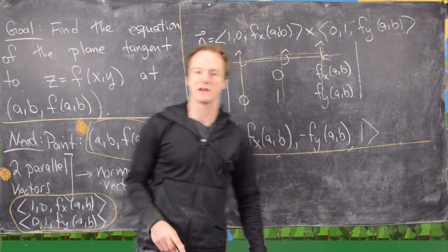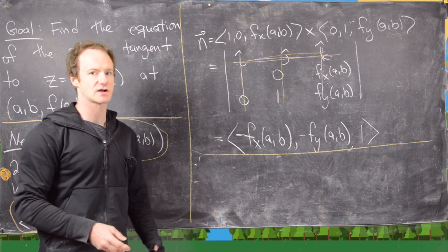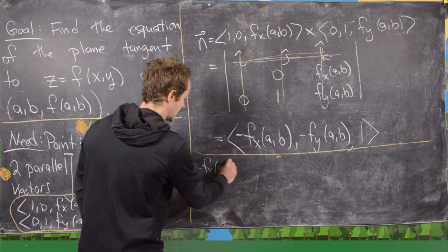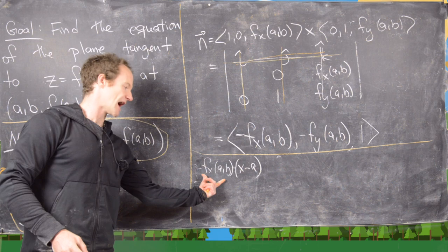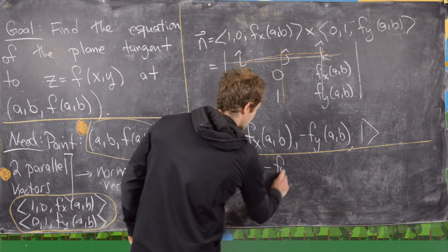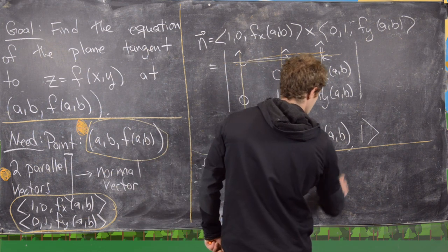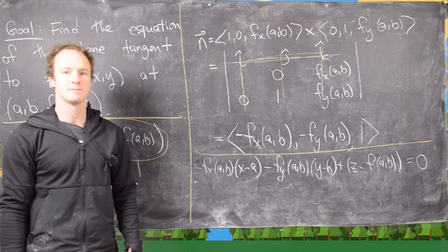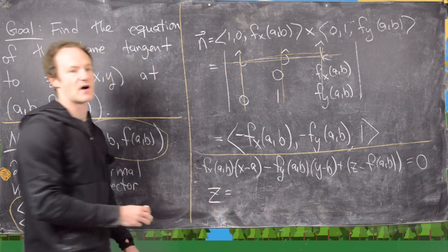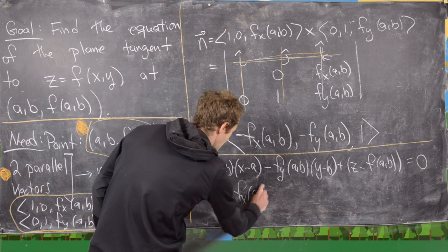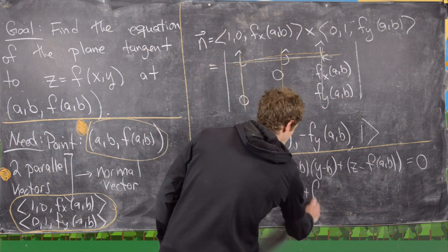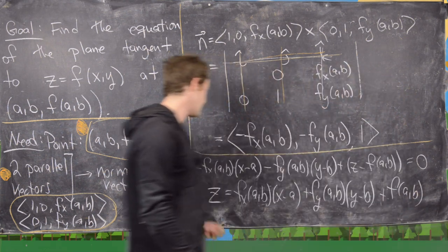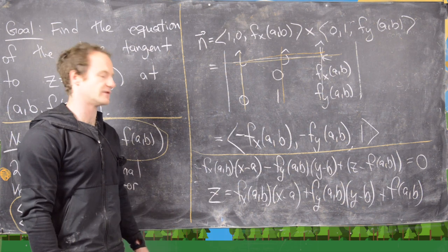Now that we have a normal vector and a point, we can write the equation of the tangent plane. Using the standard point-normal plane formula, we get: minus f sub x of a, b times (x minus a), minus f sub y of a, b times (y minus b), plus (z minus f(a,b)) equals zero. Solving for z, we get: z equals f_x(a,b)(x minus a) plus f_y(a,b)(y minus b) plus f(a,b). That is the standard formula for the equation of a tangent plane.